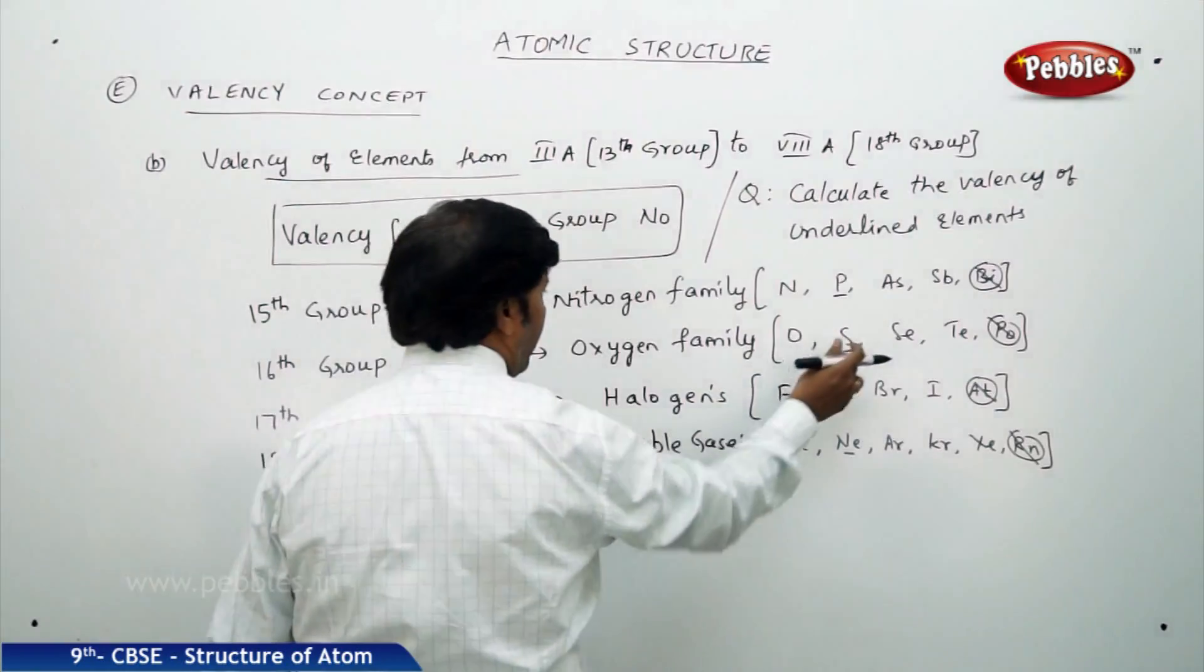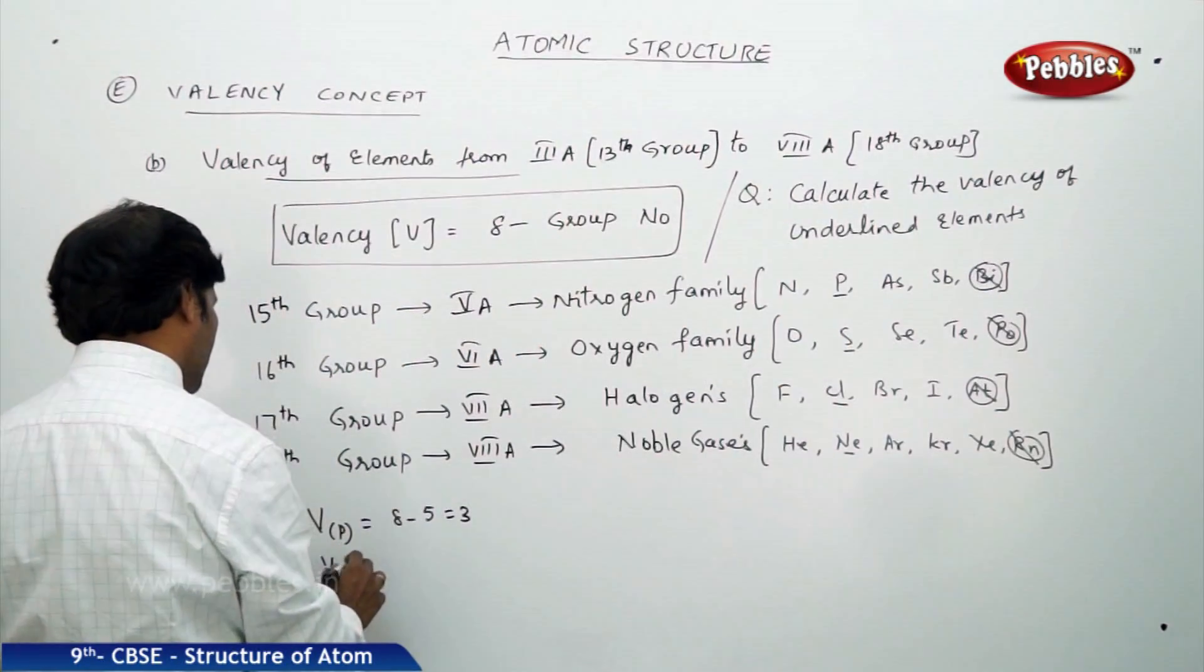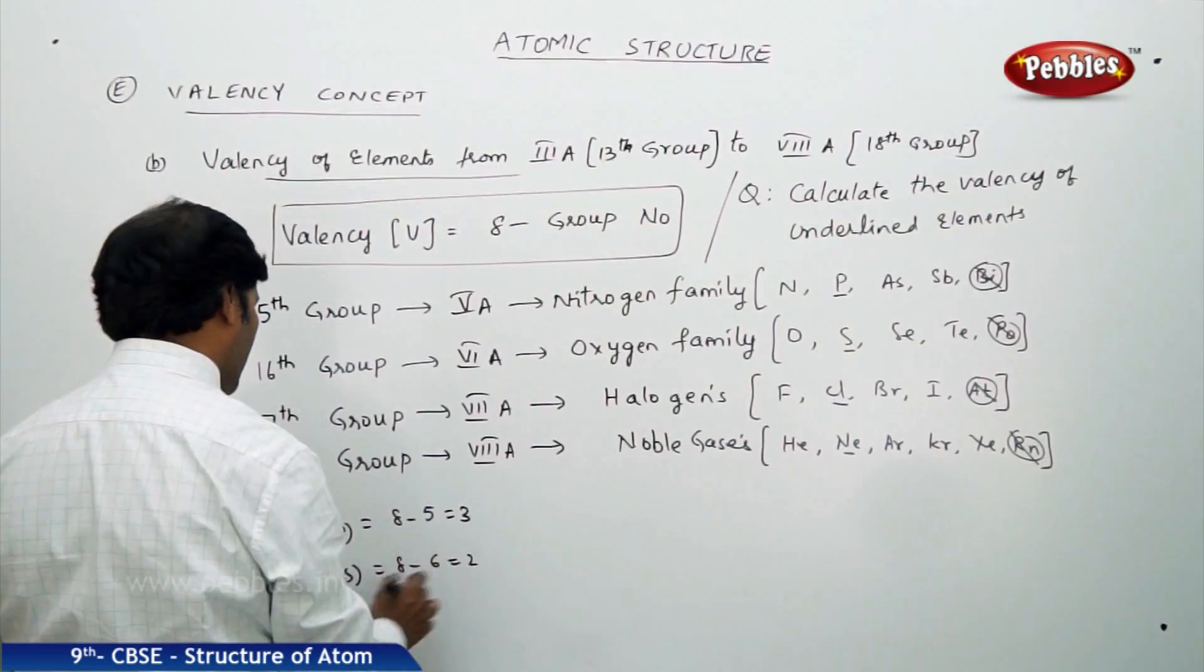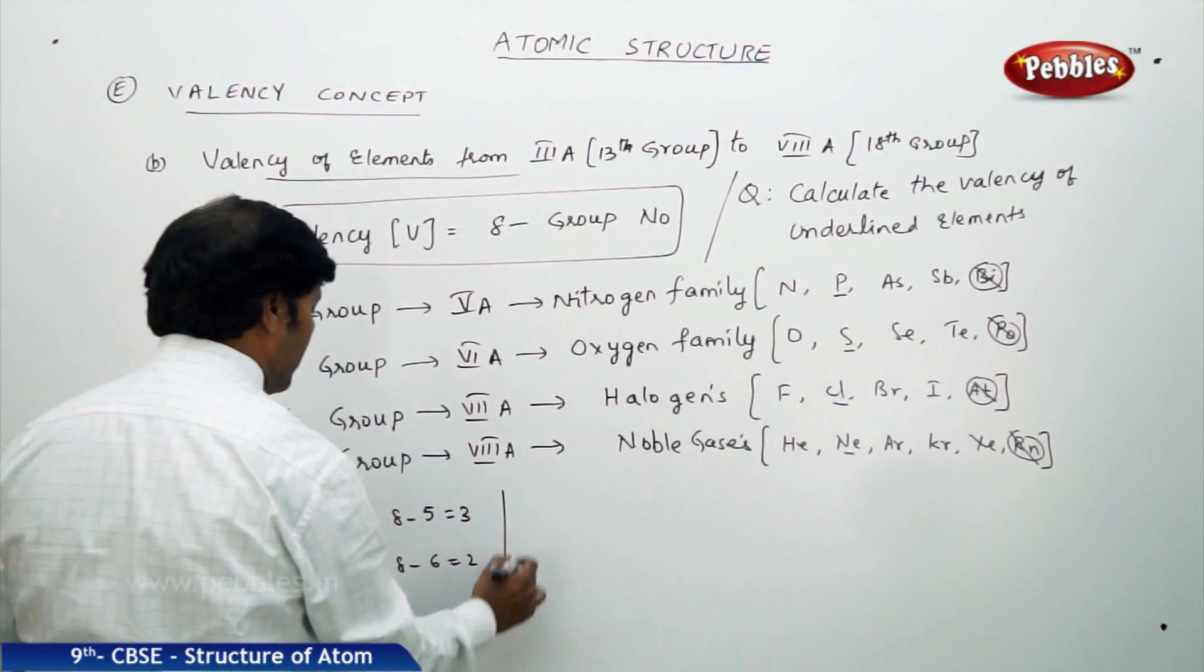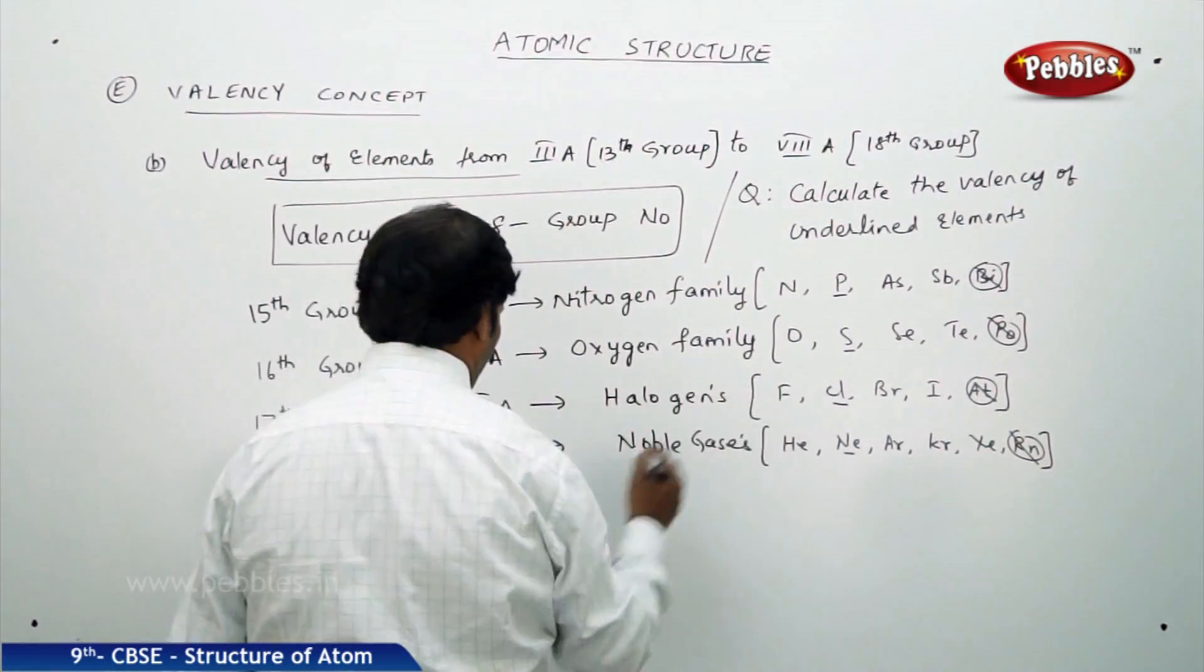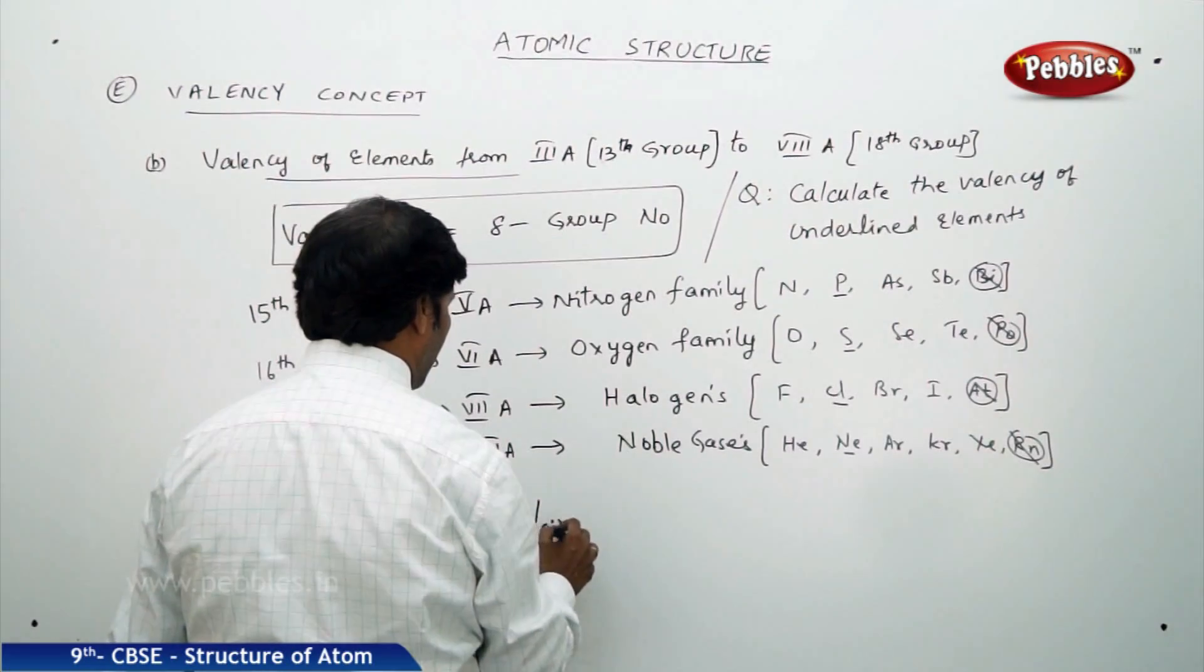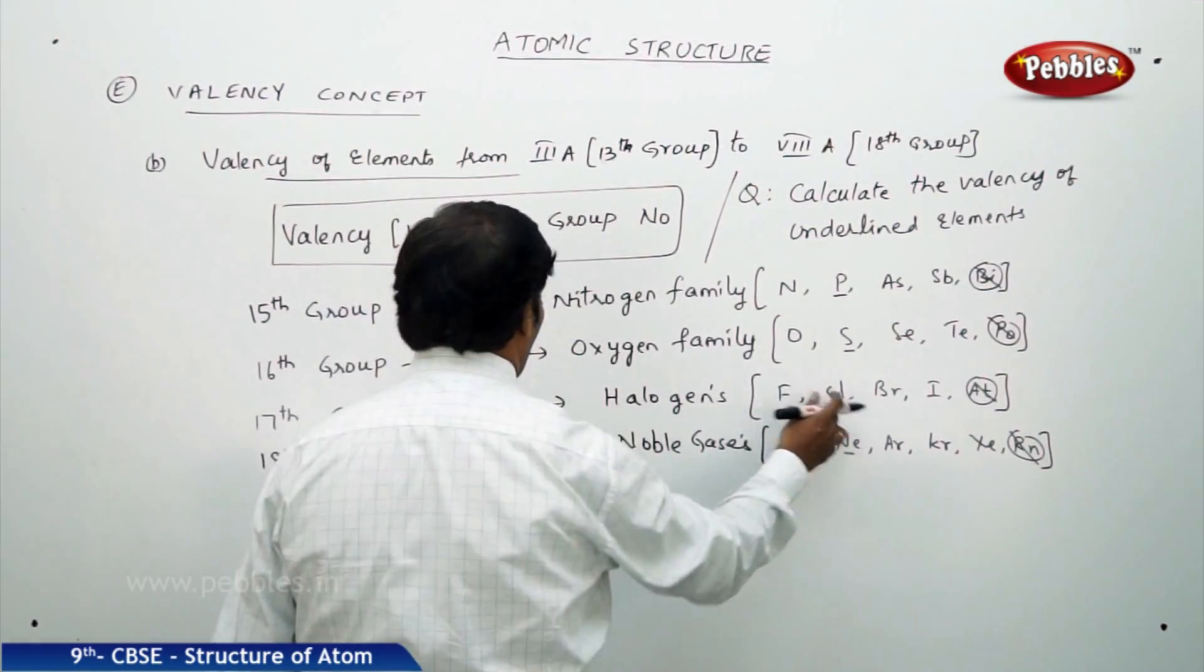Valency of sulphur S is equal to 8 minus 6 which is equal to 2. Therefore, valency of sulphur is 2. Similarly, valency of chlorine Cl is equal to 8 minus 7.